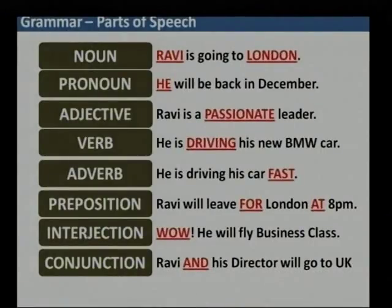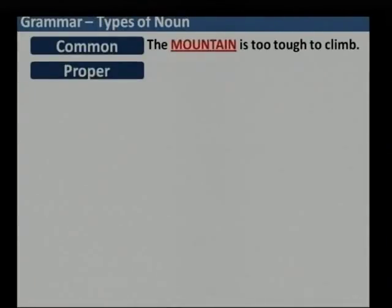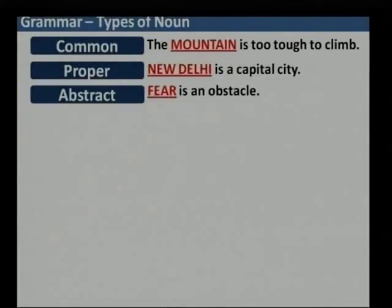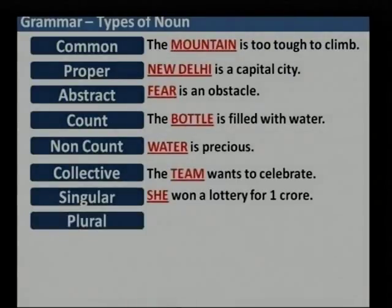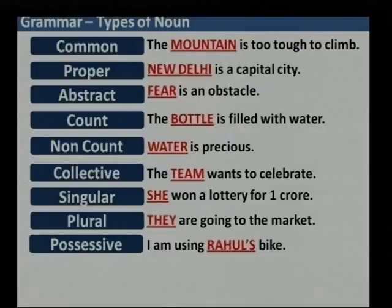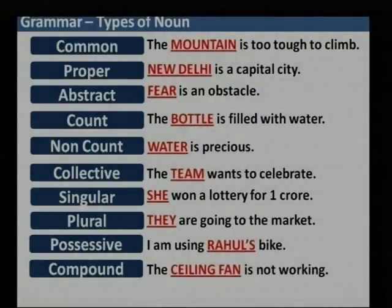We looked at the parts of speech: noun, pronoun, adjective, verb, adverb, preposition, interjection, and conjunction. We looked at the types of noun — common noun, proper noun, abstract noun, count noun, collective, singular, plural, possessive, and compound noun.